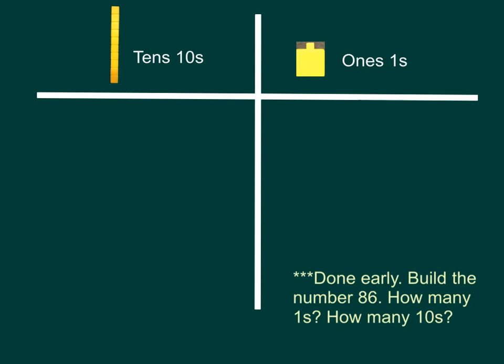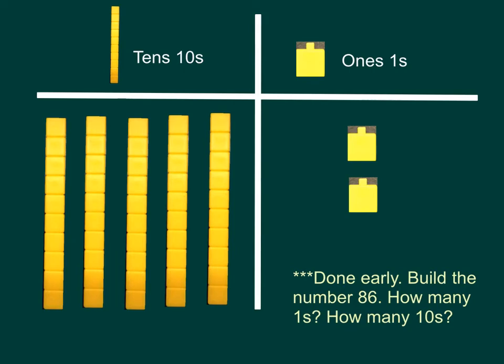Clear your boards. We're going to try another. On your boards, place 5 tens or 5 longs and 2 units. Think about what number do these base 10 blocks represent or show. If you get done early, build the number 86. How many ones did you use? How many tens did you use? Pause video now. Great job. You built the number 52.